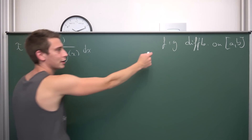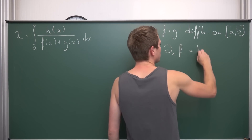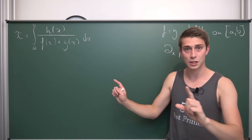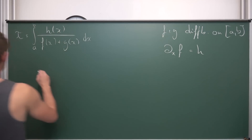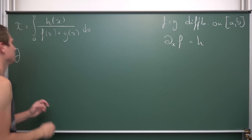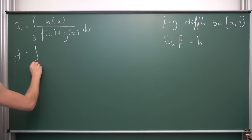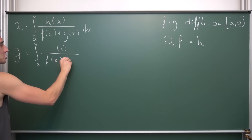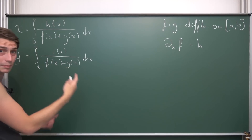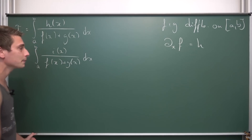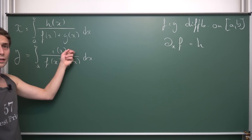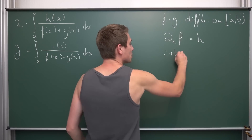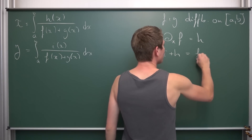There's another condition I would like to place on F: I want the differential of F to be equal to H. Now we are going to introduce another integral J, which is going to be part of the system of equations. We define J on the same interval from A to B, but this time integrating some function I of X over F of X plus G of X — the same interval and the same denominator. Now I would like to place another condition on I.